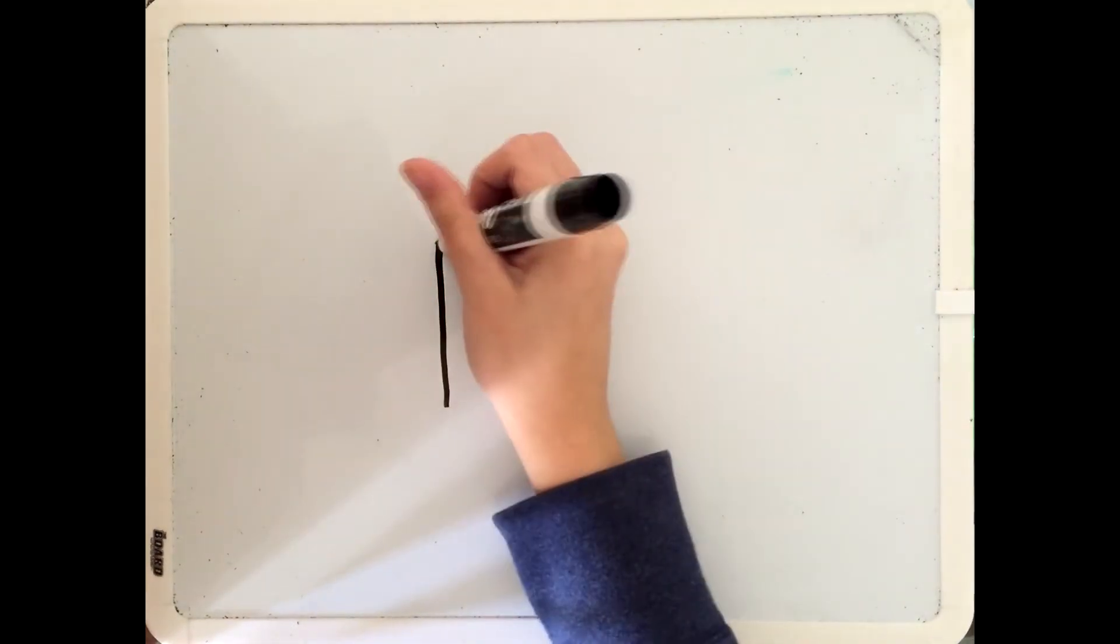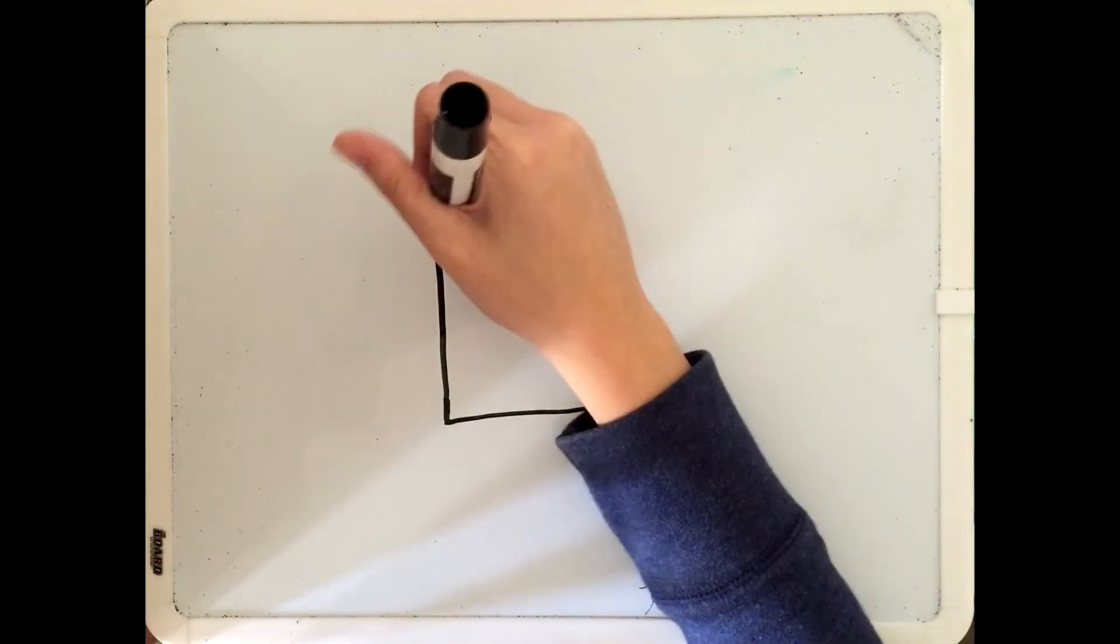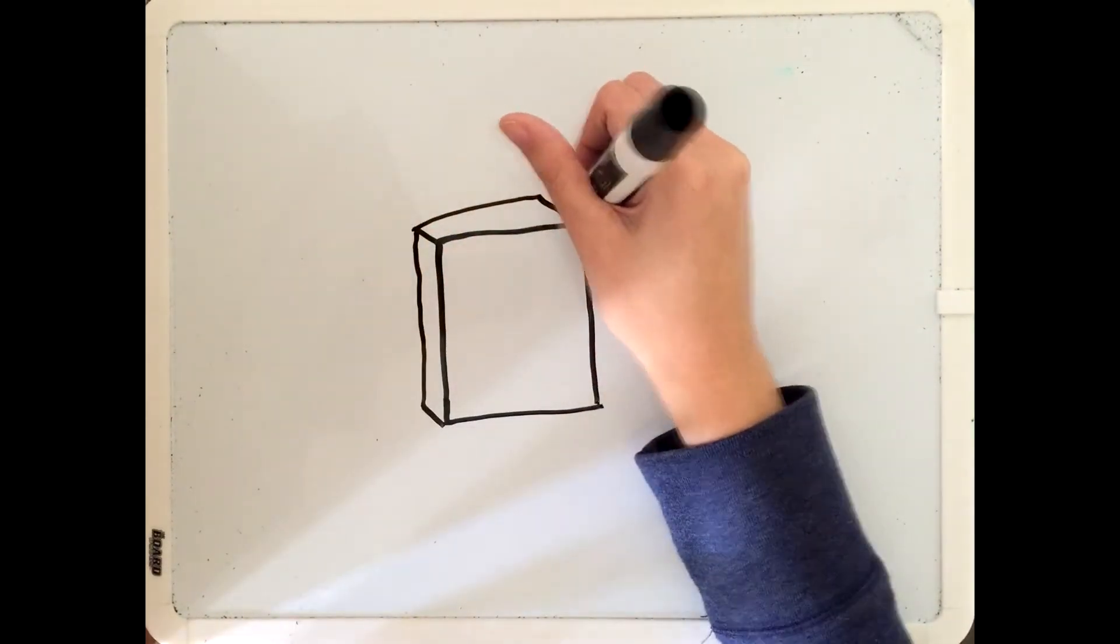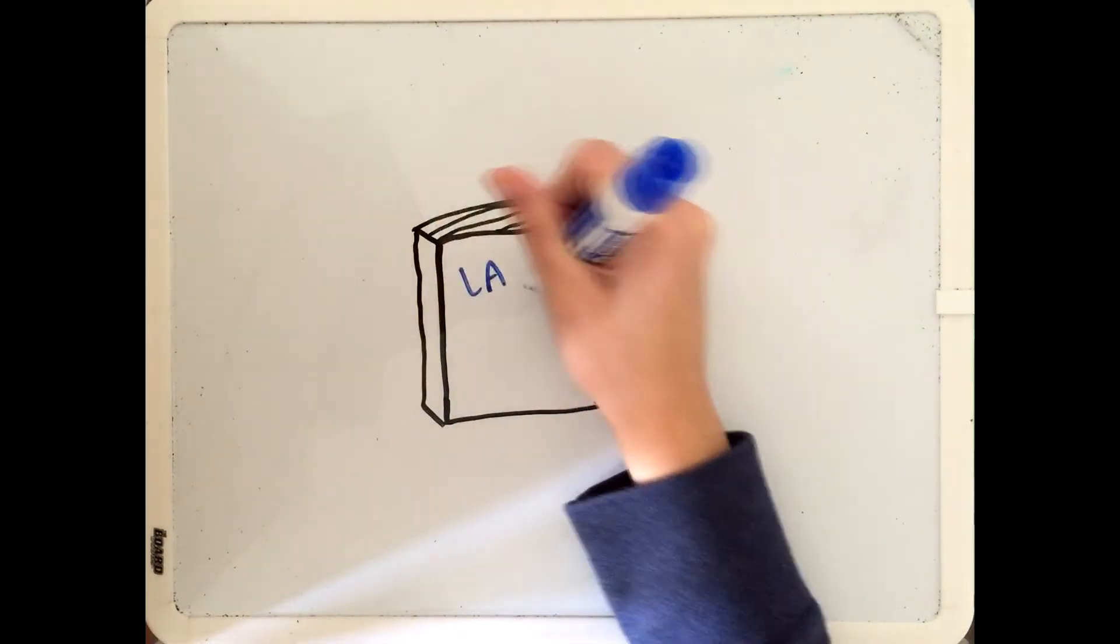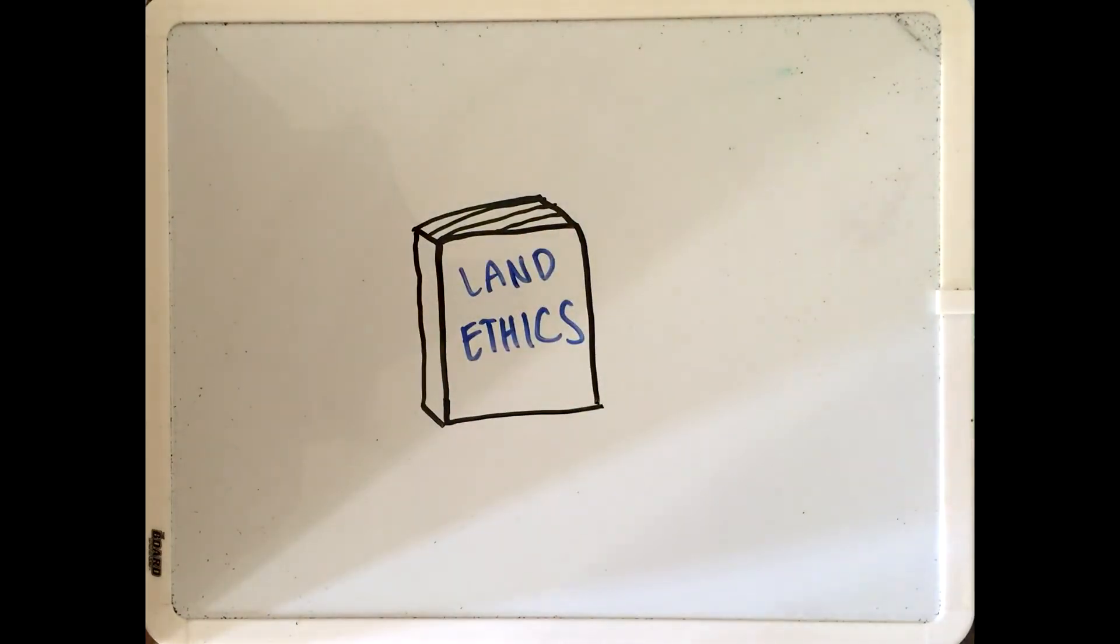Aldo Leopold was a forest and wildlife manager and embraced an ecocentric ethical outlook after going through the experience of shooting a wild wolf. He wrote the 1949 essay called Land Ethics, which helped guide people with their decision making with the wildlife. He believed in preserving nature.